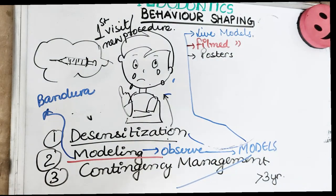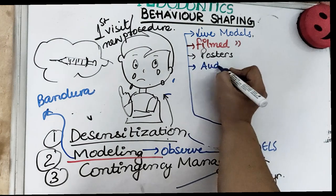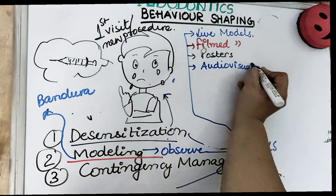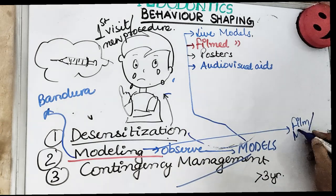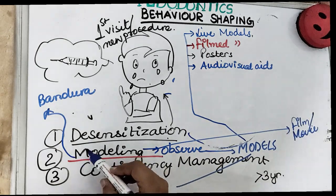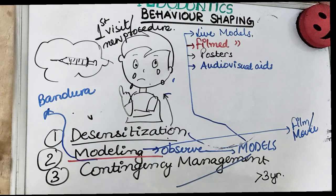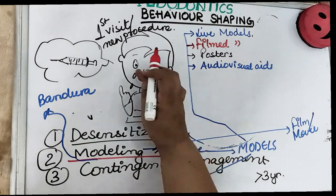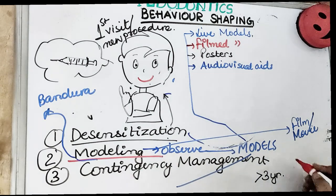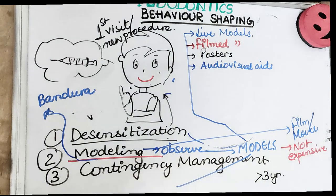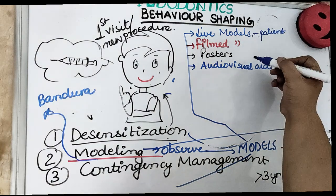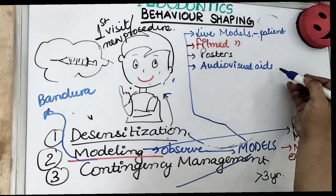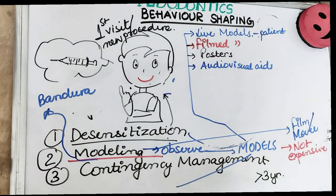You can also run a film showing all the procedures to be done on the child. Modeling improves the behavior of an apprehensive child who has not had any previous dental experience, and the good thing about live modeling is that you don't require any additional armamentarium or equipment. Modeling can be done using live models, any patient, filmed models, posters, or audiovisual aids.